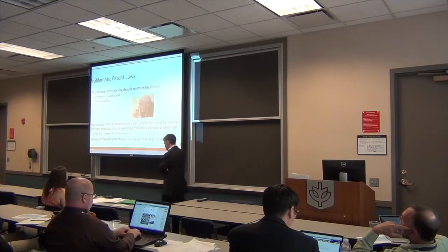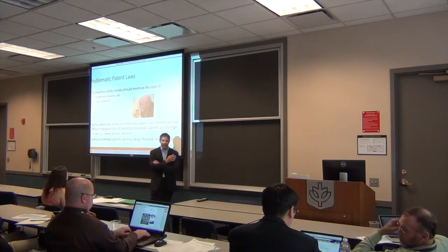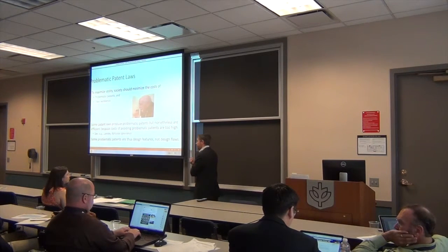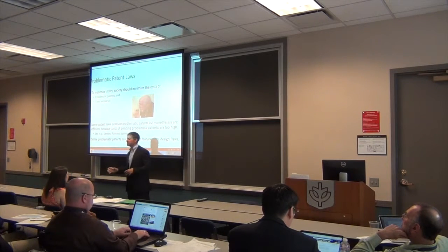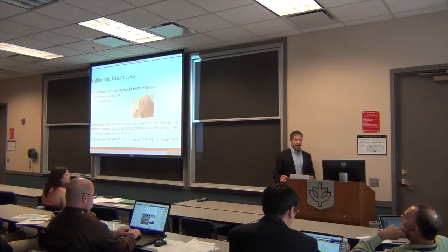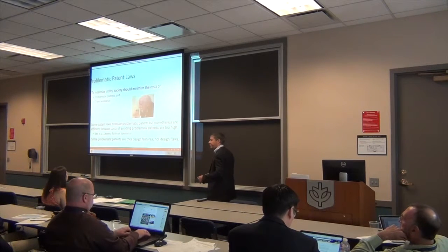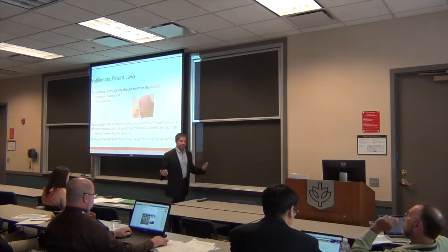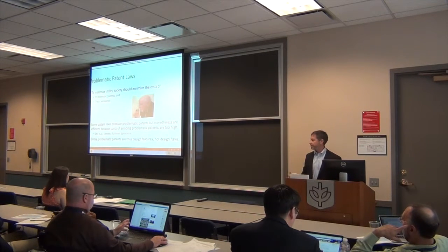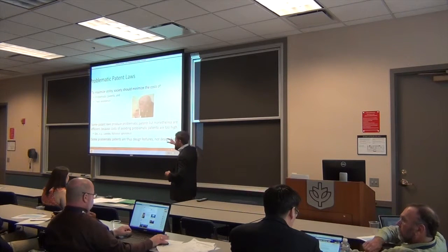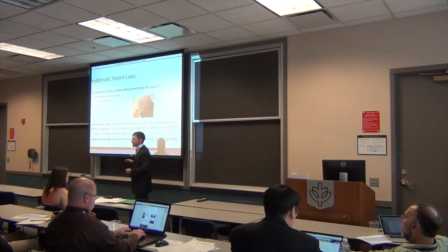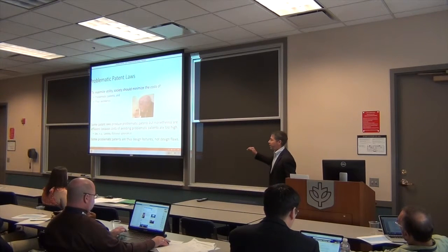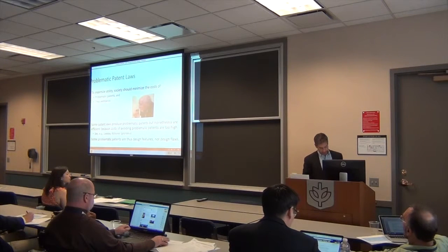Another thing I hope this framework helps clarify is that it allows us to assess patent laws in a more nuanced manner. As others have noticed in discussions of rational ignorance, laws are always going to be under- and over-inclusive to some respect. We don't necessarily want to be excluding all problematic patents or categories of patents upfront, because that might not be the efficient route. By looking at patent laws along individual dimensions, we can have a more nuanced conversation about the costs and benefits of individual patent laws in light of ideas such as rational ignorance.